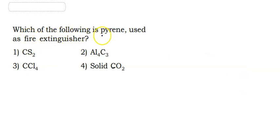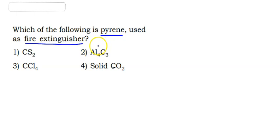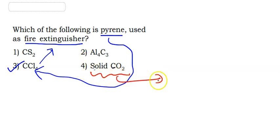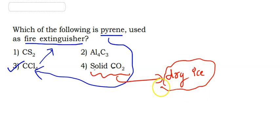Which of the following is Pyrene, used as a fire extinguisher? The four options are CS2, Al4C3, CCl4, and solid CO2. Pyrene is CCl4, so the answer is option 3. One important note: solid CO2 is called dry ice.